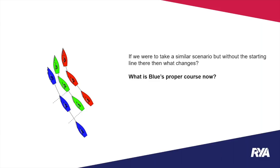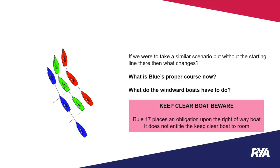Even though blue is breaking rule 17, the windward boats still have to keep clear. Rule 17 places an obligation on the right-of-way boat but does not entitle the keep-clear boat to room. The windward boats' only remedy is to protest if they believe blue is breaking rule 17.